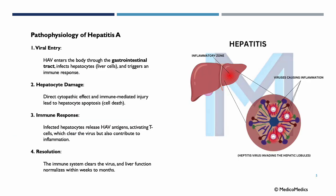Now let's talk about the pathophysiology of Hepatitis A. The virus enters the body through the gastrointestinal tract, infects hepatocytes — our liver cells — and triggers an immune response. Direct cytopathic effect and immune-mediated injury eventually lead to hepatocyte apoptosis, meaning cell death. After viral entry and hepatocyte damage, infected hepatocytes release HAV antigens, activating our immune cells — our T cells — which then clear the virus but also contribute to inflammation.